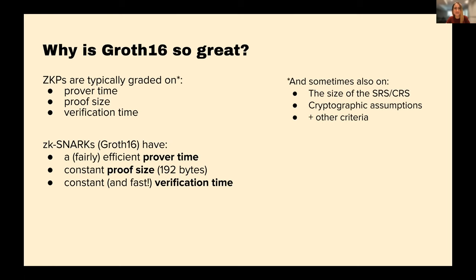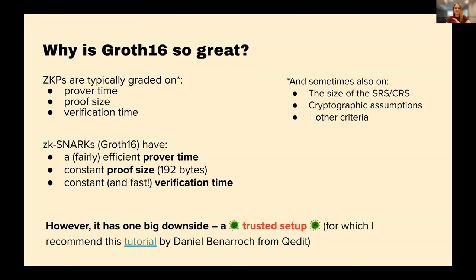ZKPs are great except for one big downside people talk about very frequently: they require something called a trusted setup. ZKPs require that common reference string or structured reference string, and to get that as part of the challenge, some people have to come together and provide their randomness. If all of them collude, the system could potentially be flawed. Practically, the chance of that happening is pretty small, but people have been questioning whether we can have a better proof system that doesn't require this step — something better for decentralized technology.